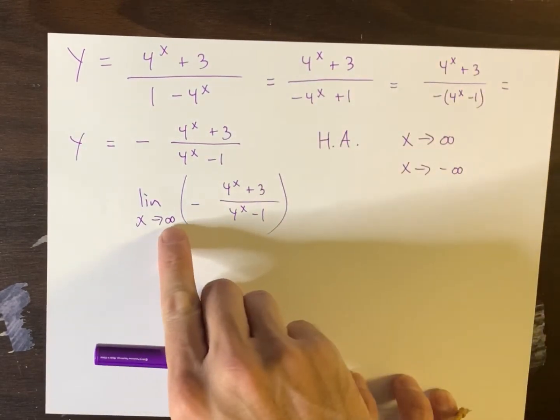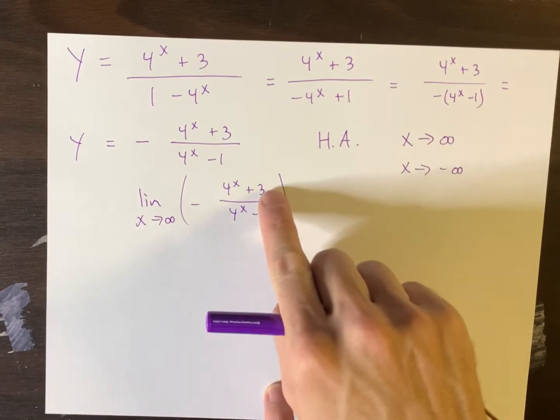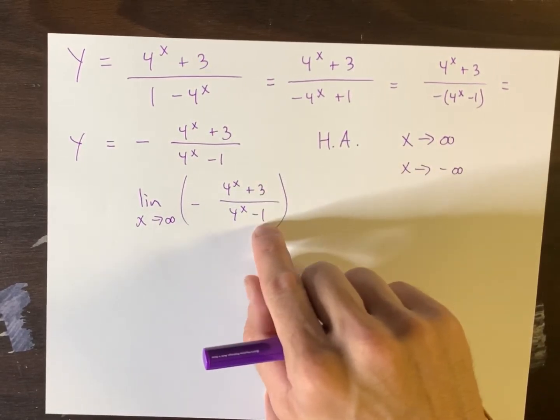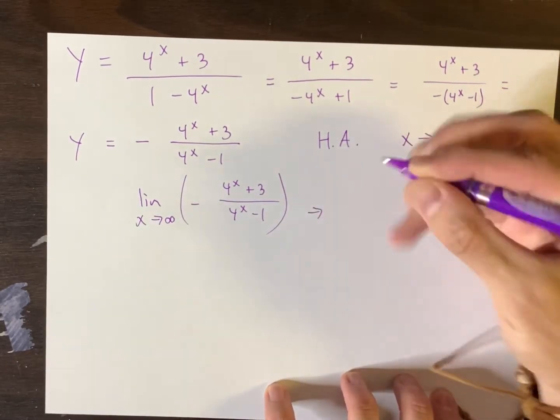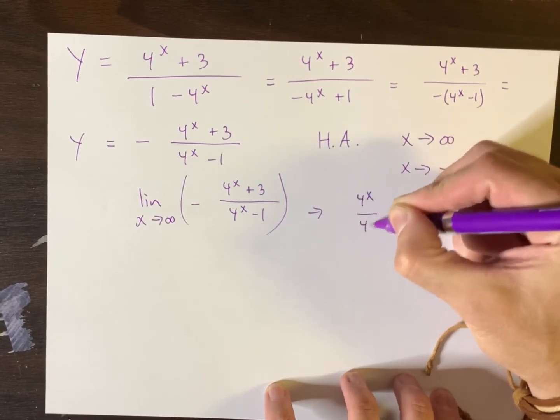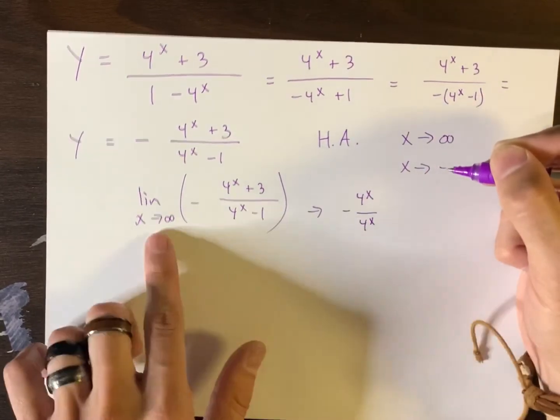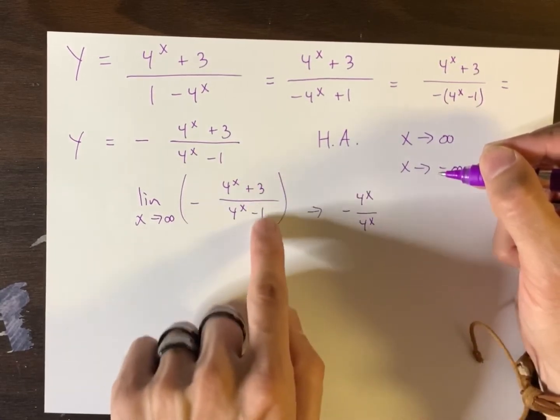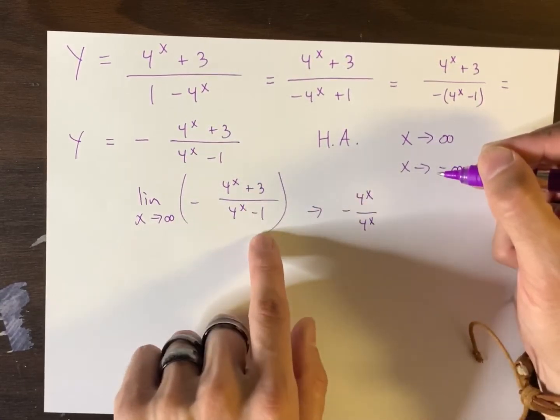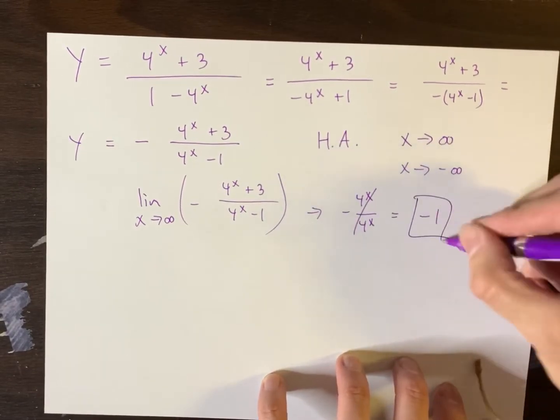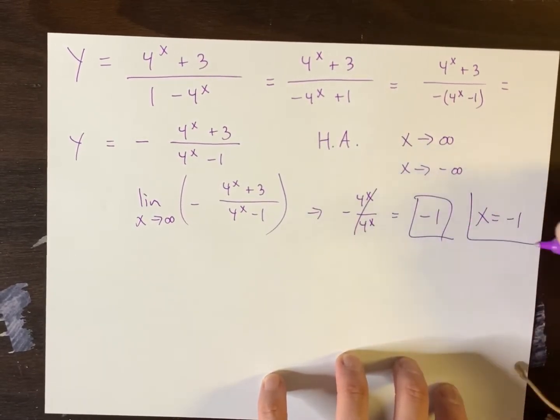then these minuscule constants, they lose their influence and you're essentially left with, now this is sort of bad notation, right? We're essentially just left with this. As X approaches a huge number, we're essentially just left with this because these numbers, they become irrelevant. And we can agree that these knock out. So you're left with negative one. That's why X equals negative one is one of the answers.